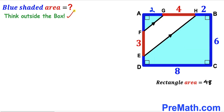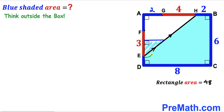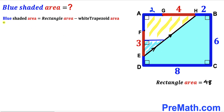We're going to think outside the box — I'm going to drag the blue triangle AFG all the way over such that its side coincides with line EH. As you can see in the next step, the triangle has been dragged over, and as a result we end up with a white trapezoid. The blue shaded region area is going to equal the area of the whole rectangle ABCD minus the area of this white trapezoid.